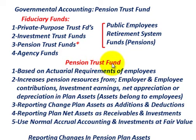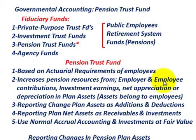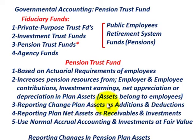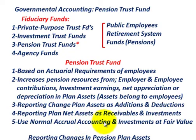For the pension trust fund, the key items are: first, it's based on actuarial requirements of the employees under the trust fund. Second, increases in pension resources come from employer and employee contributions, investment earnings, and net appreciation or depreciation in the plan assets — and the assets belong to the employees. Third, you report changes in plan assets as additions and deductions. Fourth, you report plan net assets as receivables and investments. And lastly, you use normal accrual accounting, and investments must be reported at their fair value.